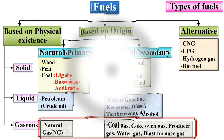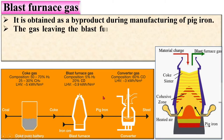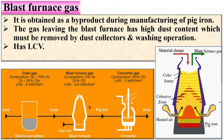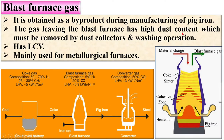The last type is blast furnace gas. It is obtained as a by-product during the manufacturing of pig iron from coke. The gas leaving the blast furnace has high dust content, as you can see in the figure. This dust must be removed by dust collector and washing operations. Blast furnace gas has a low calorific value, so it is mainly used for metallurgical furnaces.